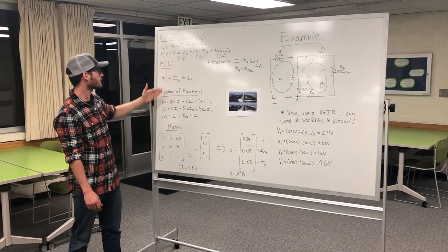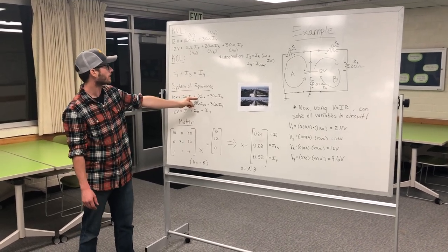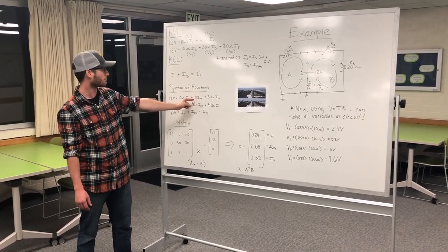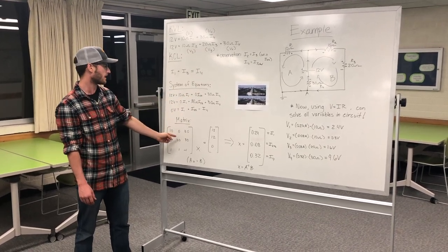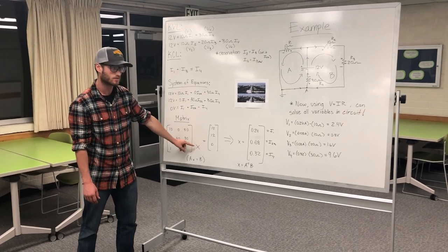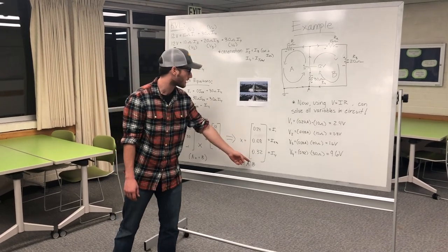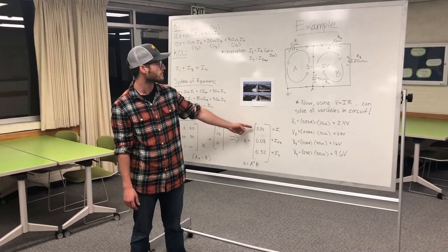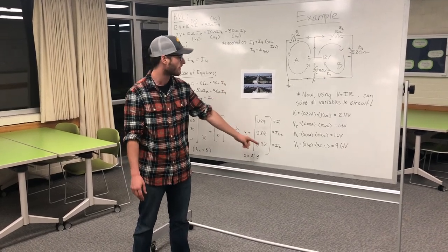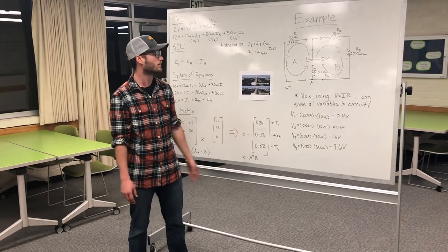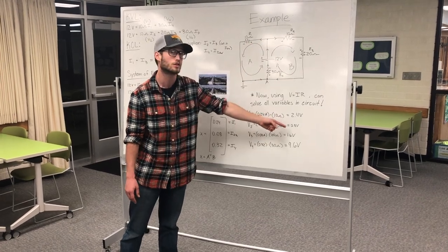Now that we have all our equations, we want to reorganize them so they're easy to use. Note that even in equations that don't involve one of the currents, we still need to include it to get the proper answer. Reorganizing and taking the coefficients, we plug them into a matrix and solve for X. To do that, we take the inverse of A and multiply it by B. Doing so gives us the values: I1 equals 0.24, I23 equals 0.08, and I4 equals 0.32. We can then plug those values back into our equations over each resistor to find the individual voltage drops.